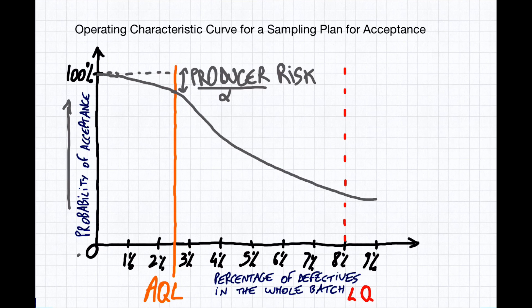It also comes at the expense of the consumer — sometimes accepting something that is not good. This is what we call the consumer risk. Where is it shown on this graph? Well, I have to introduce a new concept. It's actually not really defined front and center in the ISO 2859 standard. People usually don't know about it, but it's the limiting quality.